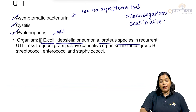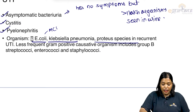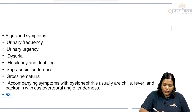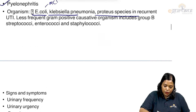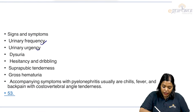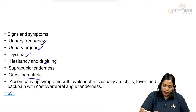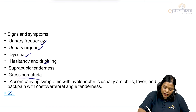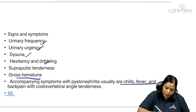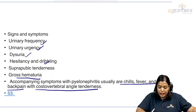Asymptomatic bacteriuria is very common in pregnancy. Signs and symptoms of UTI include urinary frequency, urgency, burning, painful micturition (dysuria), hesitancy, dribbling, suprapubic tenderness, and hematuria. When untreated, it can go into pyelonephritis, presenting with chills, fever, back pain, and costovertebral angle tenderness.